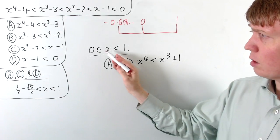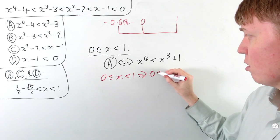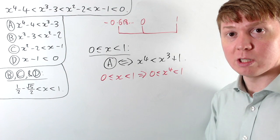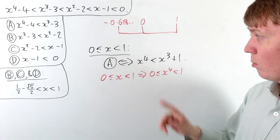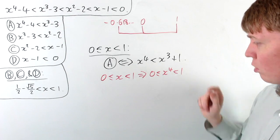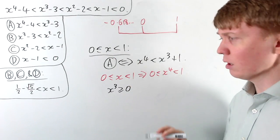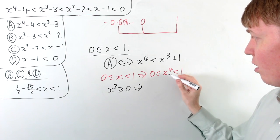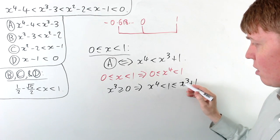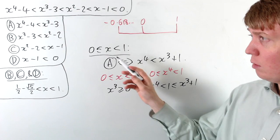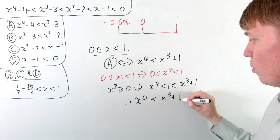Since x is between 0 and 1, x to the 4 is also between 0 and 1 — raising a number in that range to the power of 4 keeps it below 1. So x to the 4 is less than 1. Also x cubed is non-negative, so x cubed plus 1 is at least 1. Therefore x to the 4 is less than 1, which is less than or equal to x cubed plus 1, and A is automatically satisfied for all x in (0, 1).